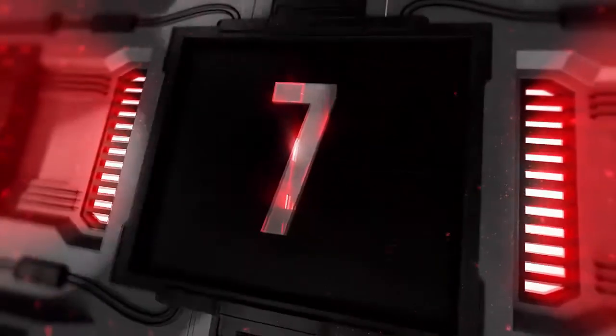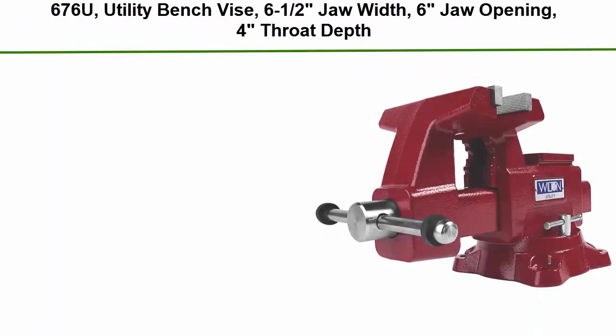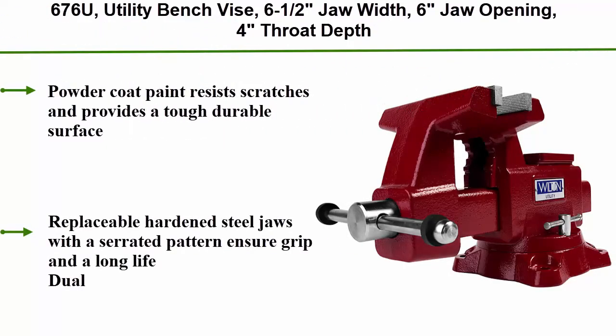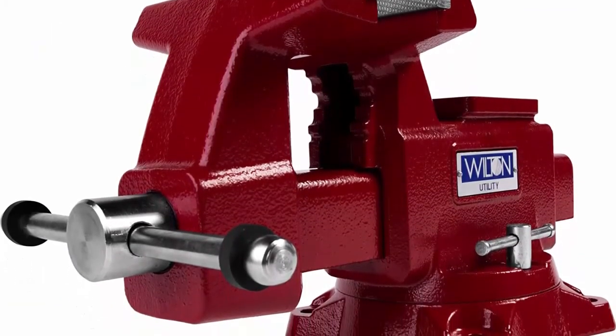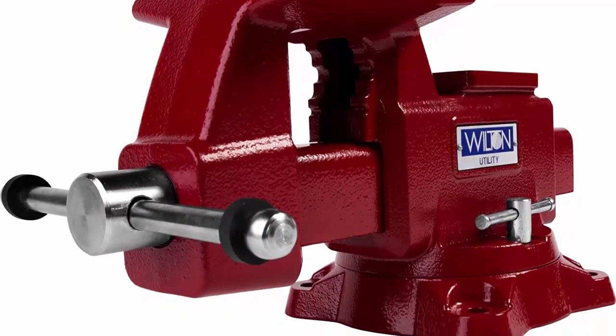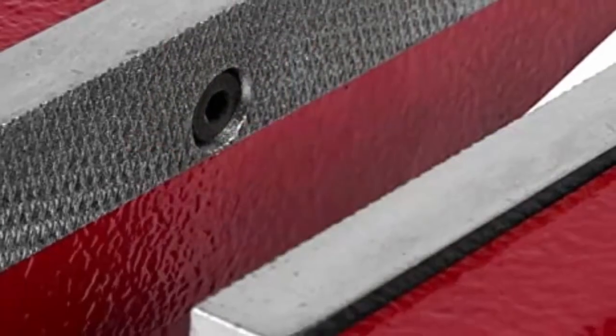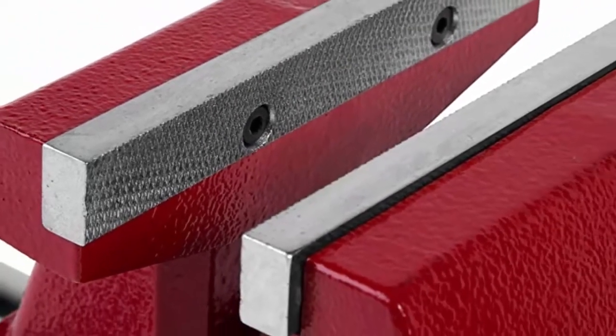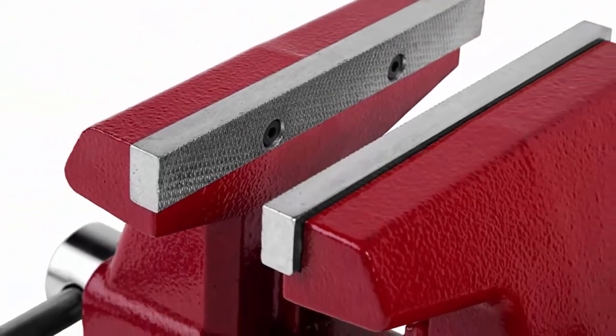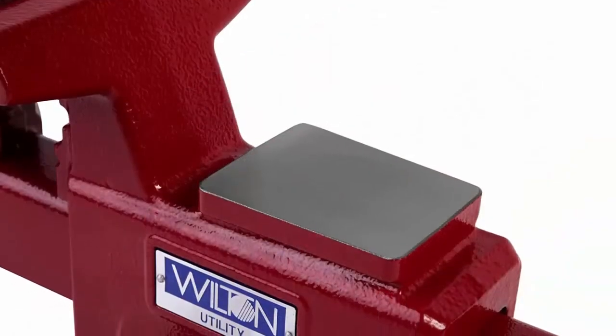Top 7: 676U utility bench vise. 6 and a half jaw width, 6 jaw opening, 4 throat depth. Powder coat paint resists scratches and provides a tough durable surface. Replaceable hardened steel jaws with a serrated pattern ensure grip and a long life. Dual lockdowns and a 360 degree swivel base. Built-in pipe jaws handle a range of pipe sizes. Large anvil work surface for forming and shaping materials.